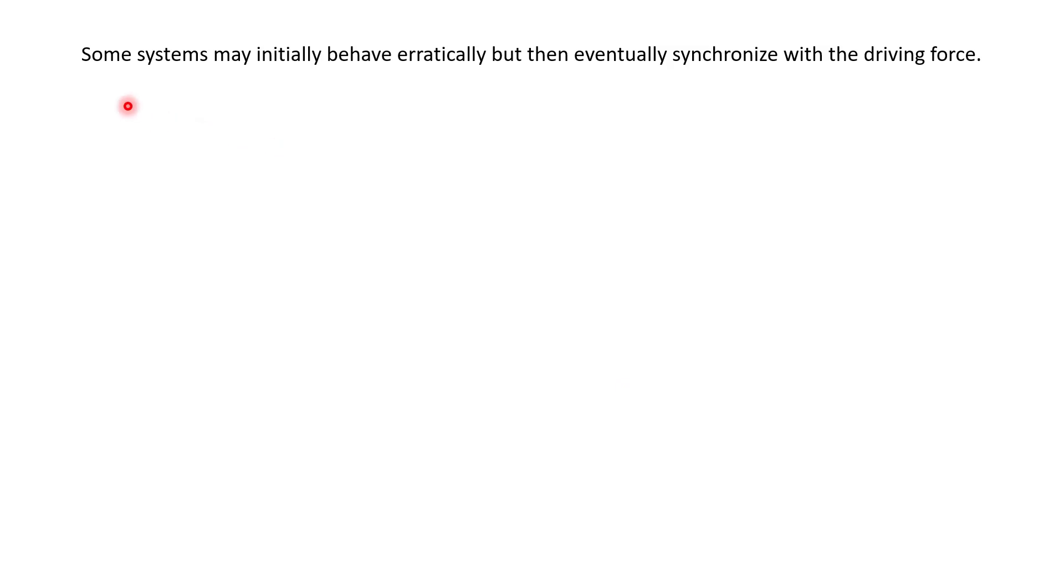And so the last thing to mention to you guys is just that some systems may initially behave erratically. But then what happens is they eventually synchronize with the driving force, the force that's driving them. And so in that case, we have what's called the general synchronous solution. And it looks like this. So your solution to your differential equation is y equals A cos(ωt) plus B sin(ωt). And then this is where the first derivative, you can just differentiate this. And then the second derivative, I just worked that out for you as well. So you can use this in general if you know you're looking for a synchronous response of your mass spring oscillator.